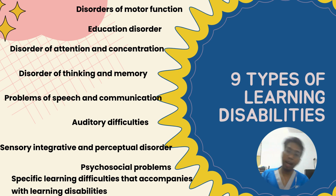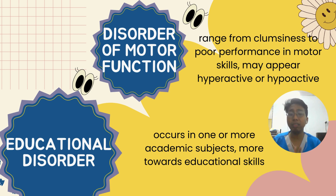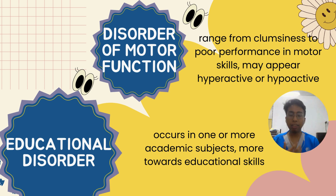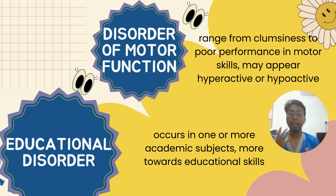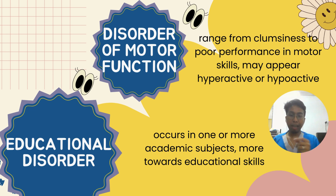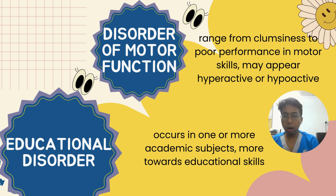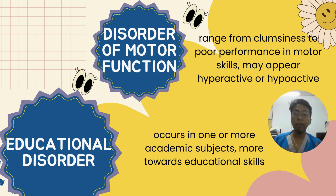The first type is disorder of motor function, which can range from clumsiness to poor performance in fine motor skills and gross motor skills. These children may appear hyperactive, restless, or hypoactive and lethargic. The second type is educational disorder, which can occur in one or more academic subjects, affecting skills such as copying words from the blackboard, coloring, writing notes, or writing cursive words.